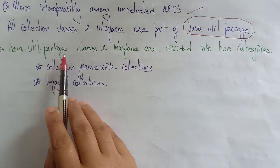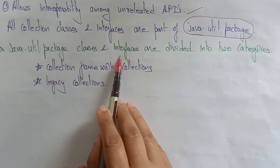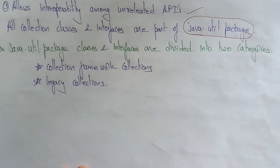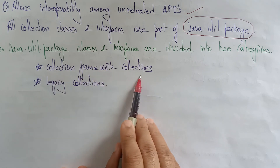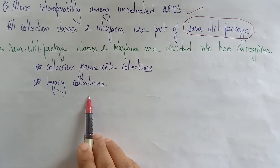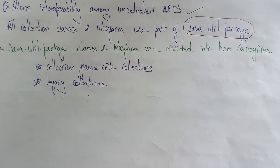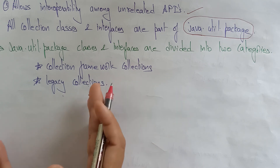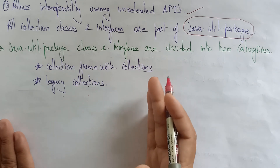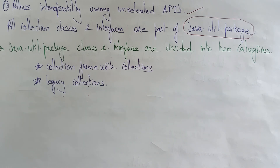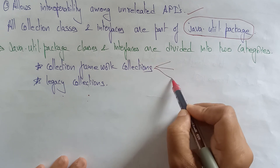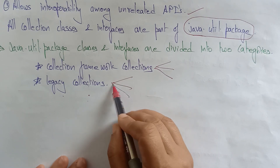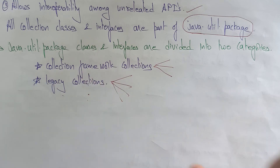The java.util package classes and interfaces are divided into two categories: one is the collection framework collections and another is the legacy collections. We will discuss collection framework collections and legacy collections in detail in the next video. These will also be divided into different types, and we will work on what exactly each one is.